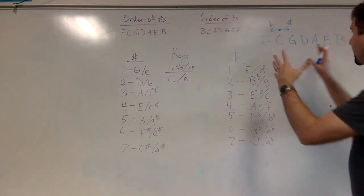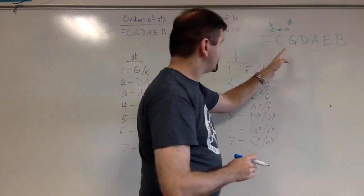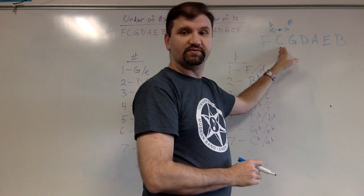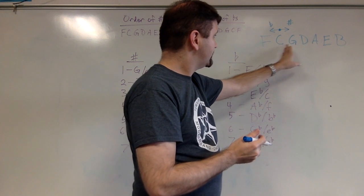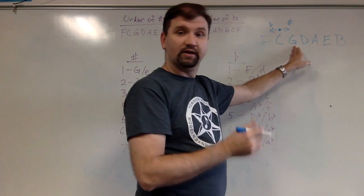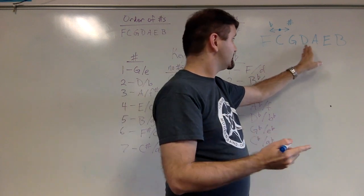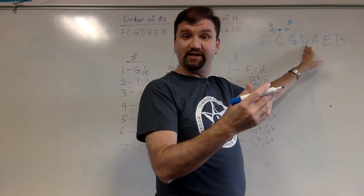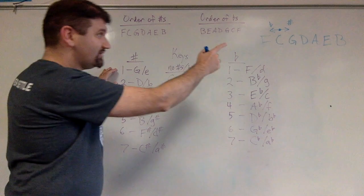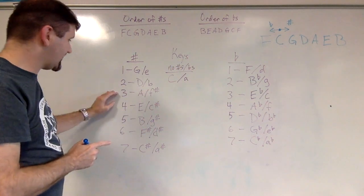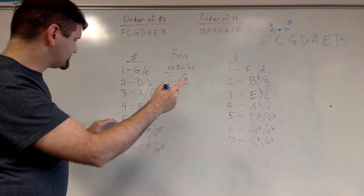What that means is now I have all of the key signatures because I know that zero sharps and flats is C. And I know that if I go this way, one sharp is the key of G and two sharps is the key of D. If I keep going, three sharps is the key of A and four sharps is the key of E and five sharps is the key of B.